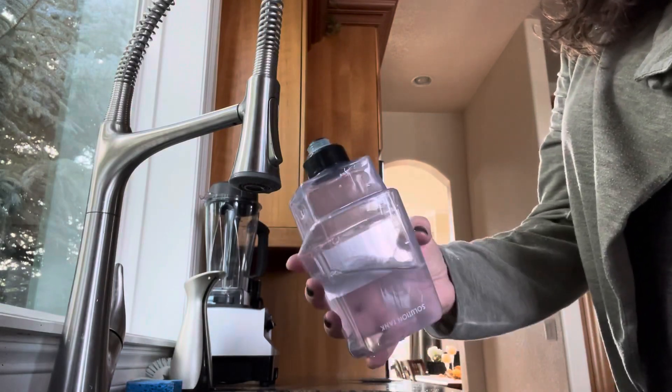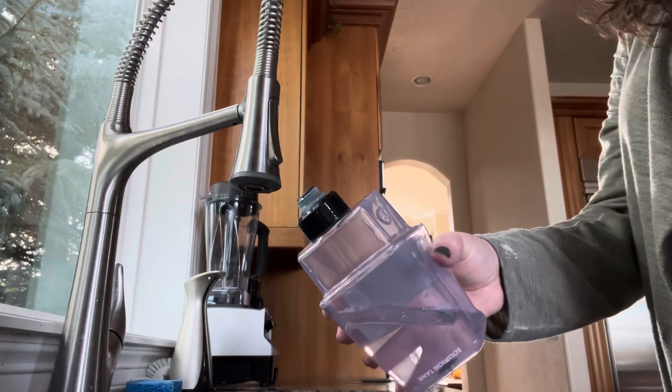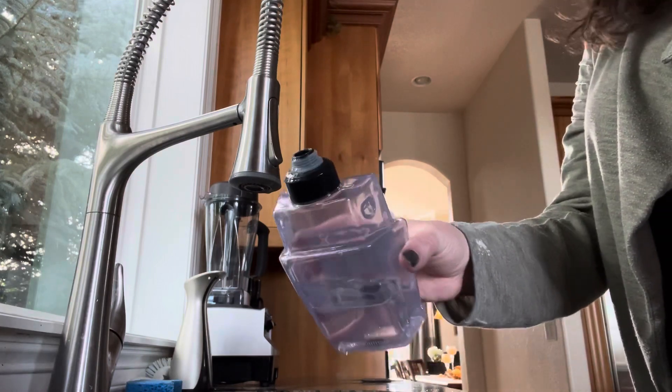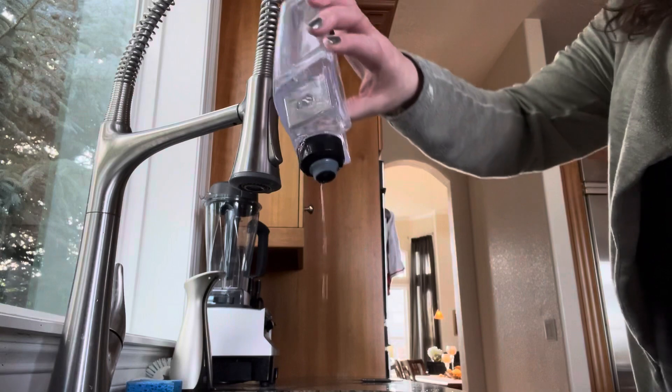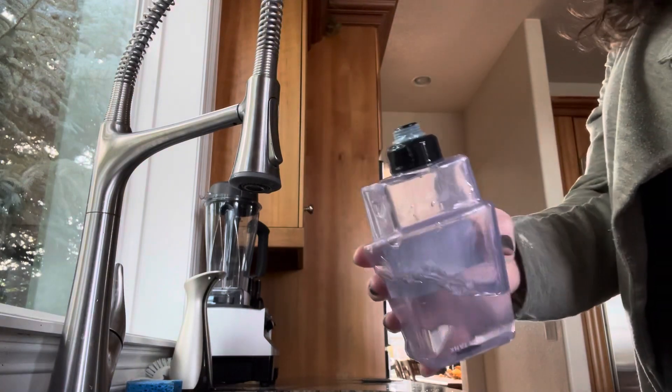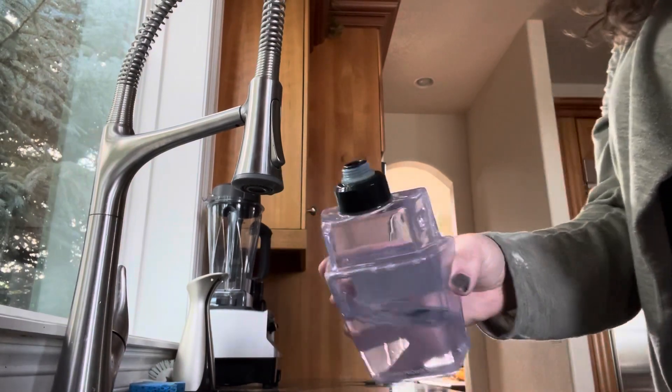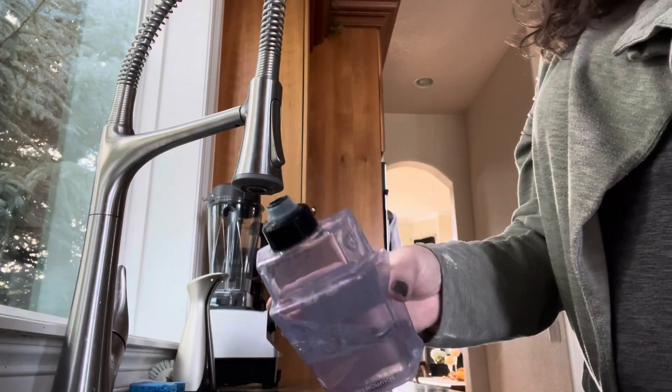This is a Hoover Smart Wash solution tank and I noticed that it was leaking. If you see, when you turn it upside down, a bunch of the solution comes out. So I got online and looked and couldn't really find anything that helped fix it other than purchasing a new part.